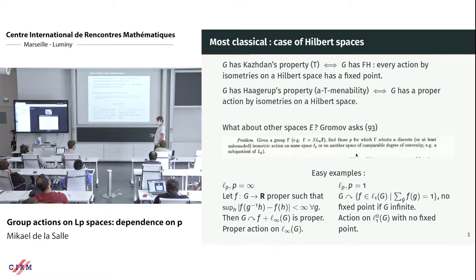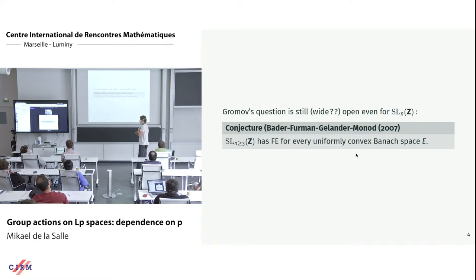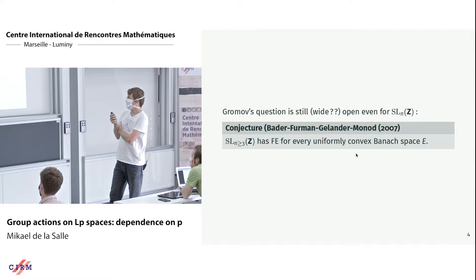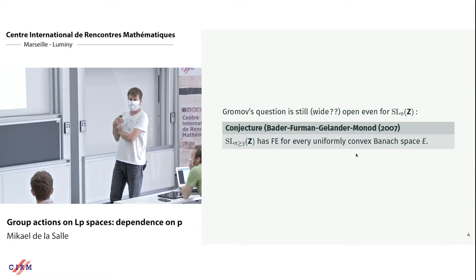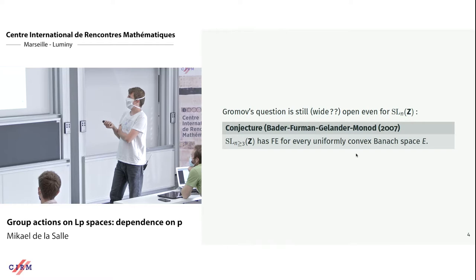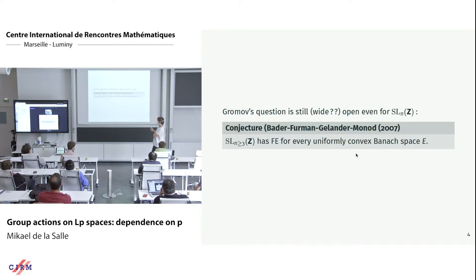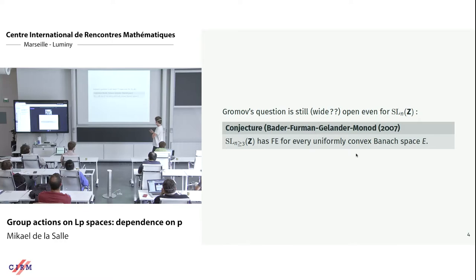This is still wide open despite many efforts — by the other speaker, Engel, Lander, Monod, Lafforgue, de Laat, and many others. There is a very intriguing conjecture: if you take SL(n,Z) in the higher-rank range, it has the fixed point property whenever it acts by isometries on a uniformly convex Banach space E — meaning every isometric action on E has a fixed point, or equivalently the cohomology with values in every orthogonal representation on every uniformly convex space vanishes. This is open, but for LP spaces it is a theorem.